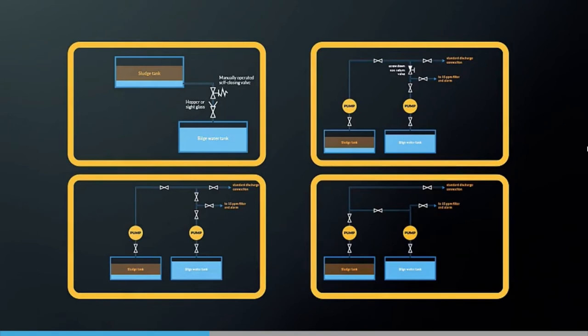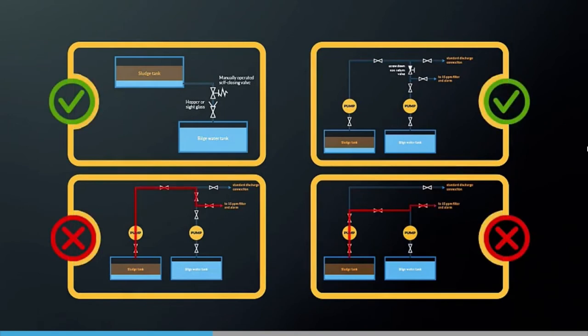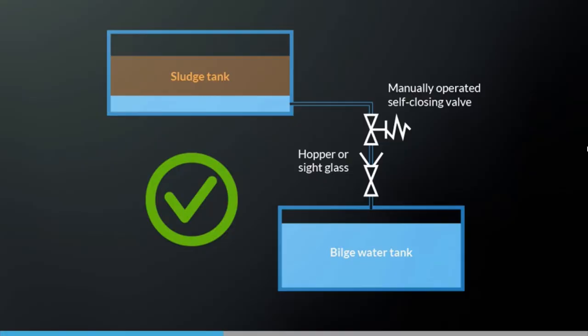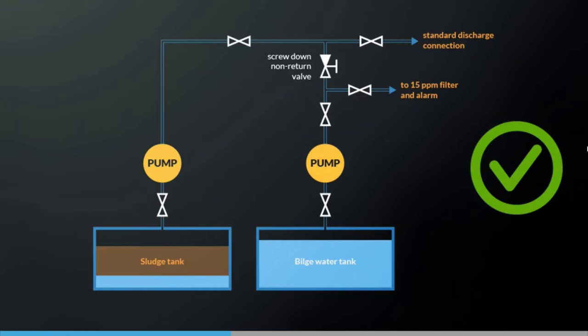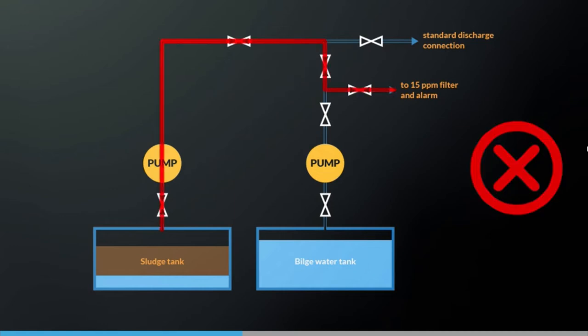MARPOL specifies which arrangements are acceptable and which are not. Here are just a few examples. This arrangement is allowed because the connection is through a sight glass or hopper. This arrangement is allowed because the non-return valve prevents flow from the sludge system into the bilge system. This arrangement would not be allowed because there is a direct connection between the sludge system and the bilge system.